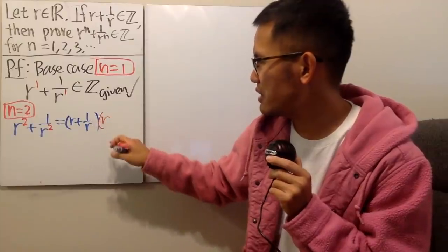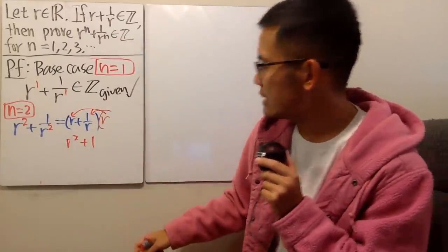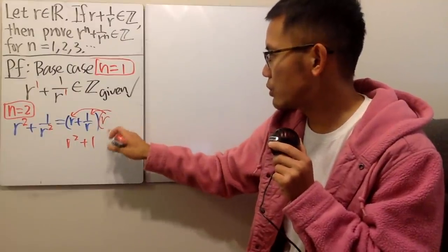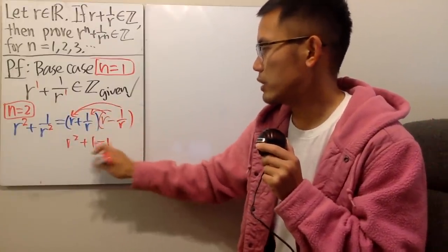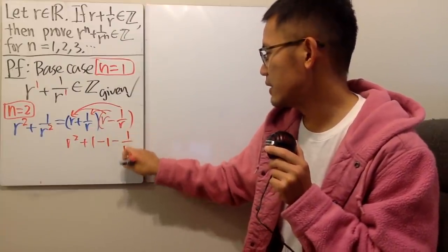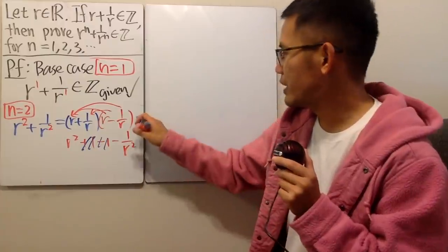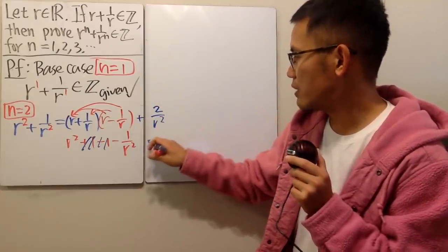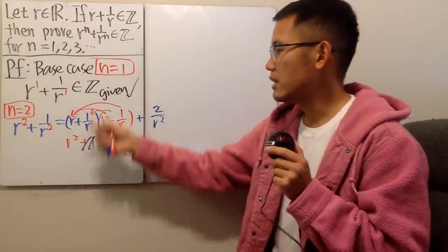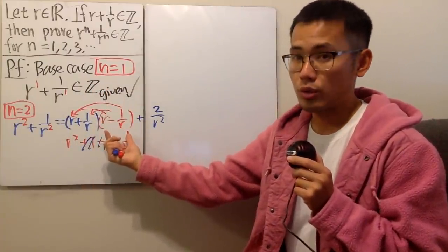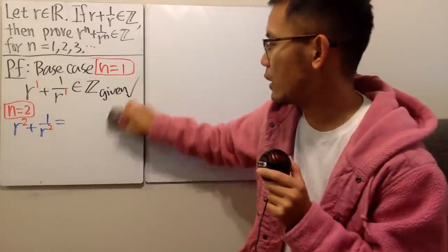First of all, we have r plus 1 over r, which is very good. But this is not the same as r squared plus 1 over r squared — I need to get to r squared. So maybe I just multiply by r, giving r squared plus 1. But I need to end up with 1 over r squared, so maybe I subtract 1 over r. Because if I do that, this times this gives minus 1 so they cancel, but this times that gives minus 1 over r squared. So they don't match — this algebra is not the approach we want.